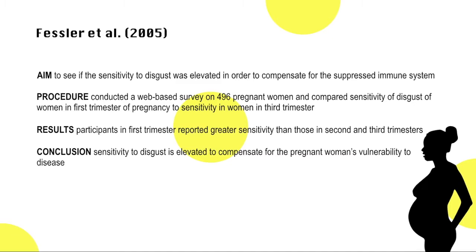The researchers conducted a web-based survey on 496 pregnant women and compared the sensitivity of disgust of women in their first trimester of pregnancy to the sensitivity of disgust of women in their second and third trimesters. The analysis showed that participants in their first trimester reported greater sensitivity than did the participants in the second and third trimesters, and they also reported more nausea. These results show support for Fessler et al.'s initial hypothesis that disgust sensitivity varies during pregnancy in a manner that compensates for the pregnant women's vulnerability to disease.